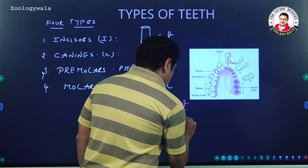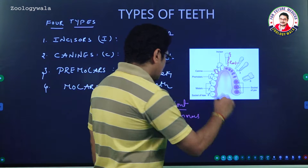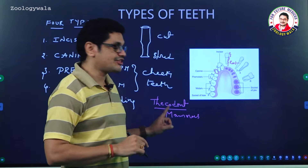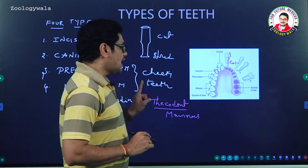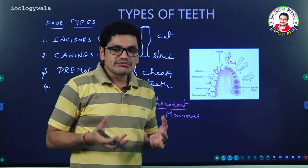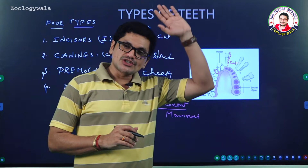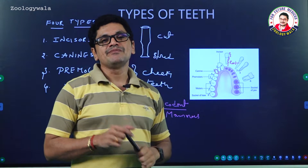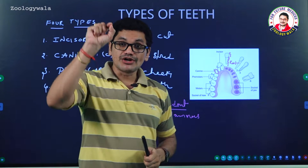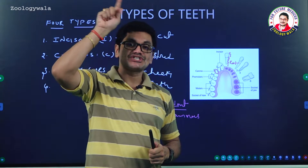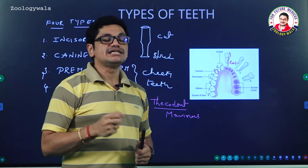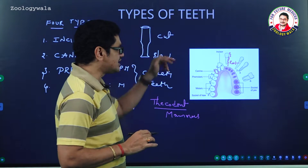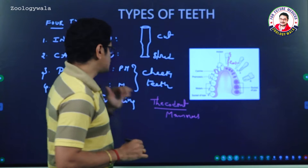In reptiles, especially crocodiles, thecodont teeth are also present — that is an exception. In the case of living birds, they do not have teeth. There is one group of extinct birds called Odontognathae where teeth are present inside the beak. In thecodont dentition, as seen in mammals, the teeth are fixed in the sockets of the jaw bone.